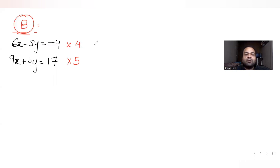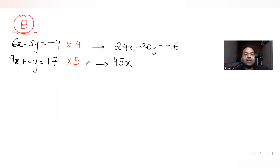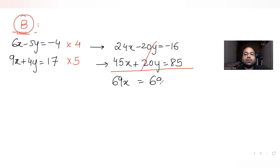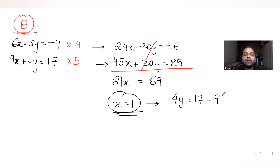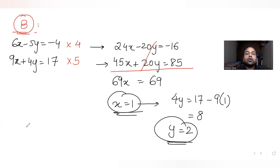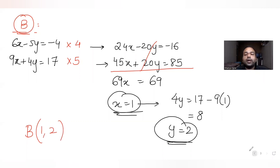Multiplying gives 24x minus 20y equal to minus 16 and 45x plus 20y equal to 85. Adding the two equations, the y terms cancel and I get 69x equal to 69, so x equals 1. Substituting x equal to 1 into the second equation gives 4y equal to 8, so y equals 2. The coordinates of vertex P are (1, 2).